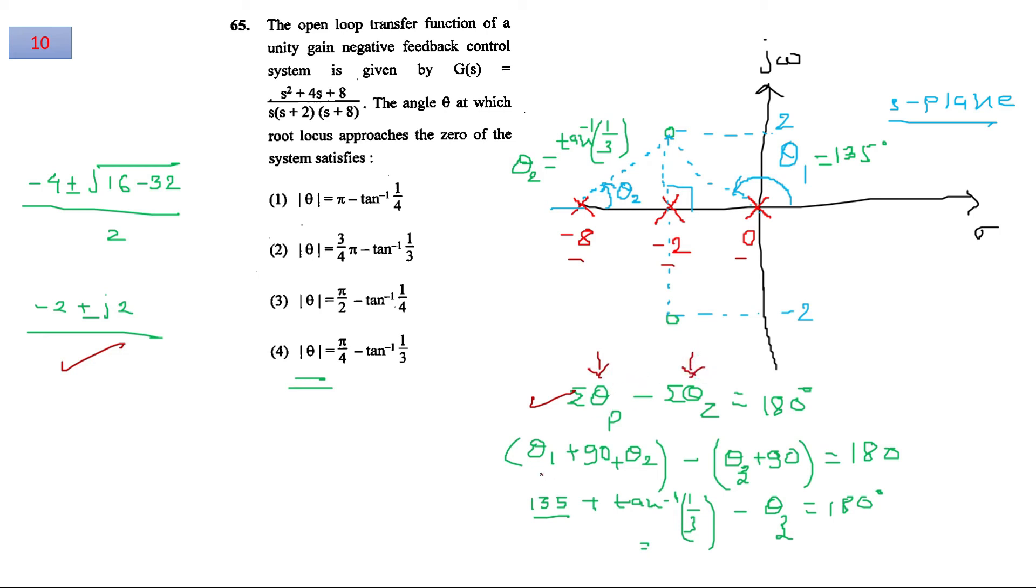The procedure is to connect all the zeros and poles and then use this relation: summation of p minus summation of z equals 180. P and z are the angles representative with reference to their poles and zeros. This summation will include all the poles angle and this will include all the zeros angle. If you put the values of theta 1, theta 2, and theta z, which is the angle with the zero which is unknown, you will find that option number 4 is the correct answer. This will be 45. This will be tan inverse 1 by 3, and you can find the angle of this given question.